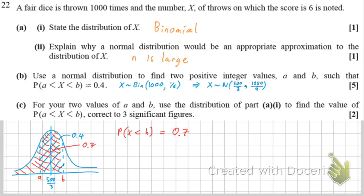Okay, you can now use your inverse normal function on your calculator to find B at the touch of a button, and B rounds to 173. I've rounded it because it does say it wants two positive integer values. So I've rounded that to 173.